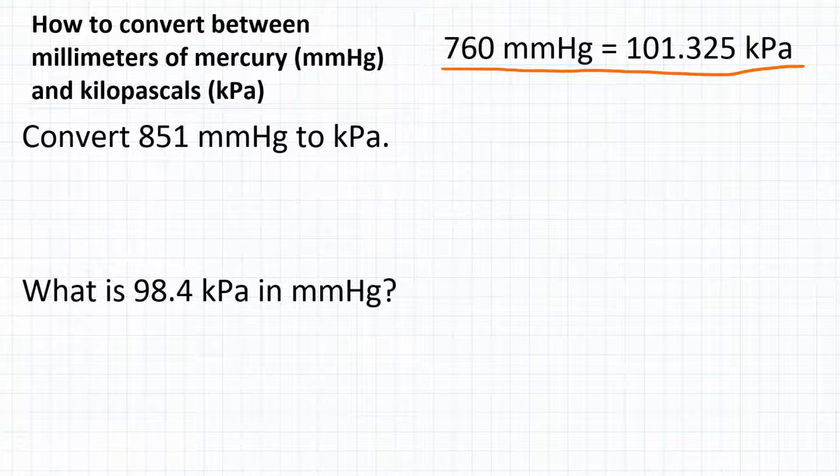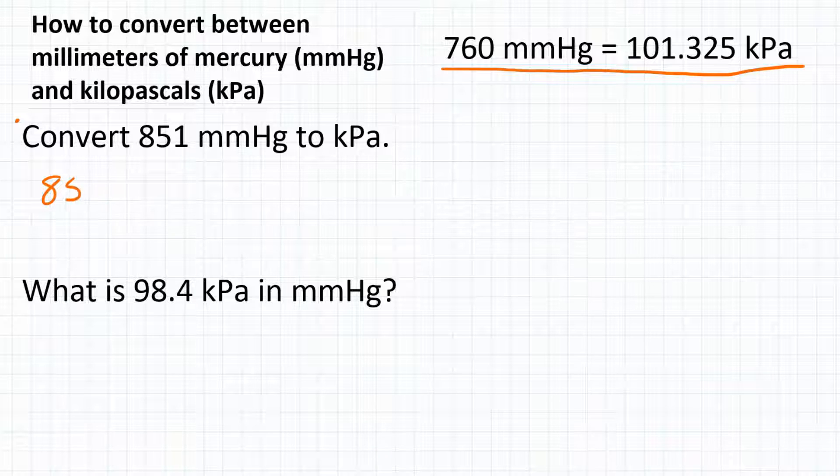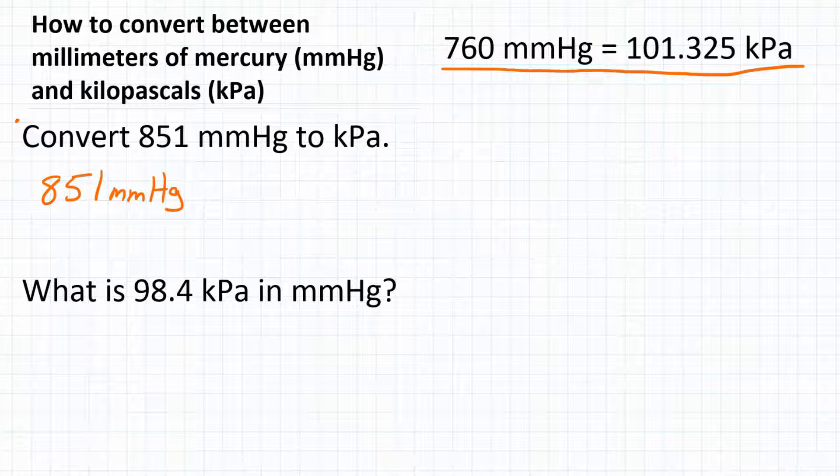Let's set up our problem for this first one, where we are converting 851 millimeters of mercury to kPa. We're going to start with 851, and that is millimeters of mercury. In the end, we want how many kPa that is.